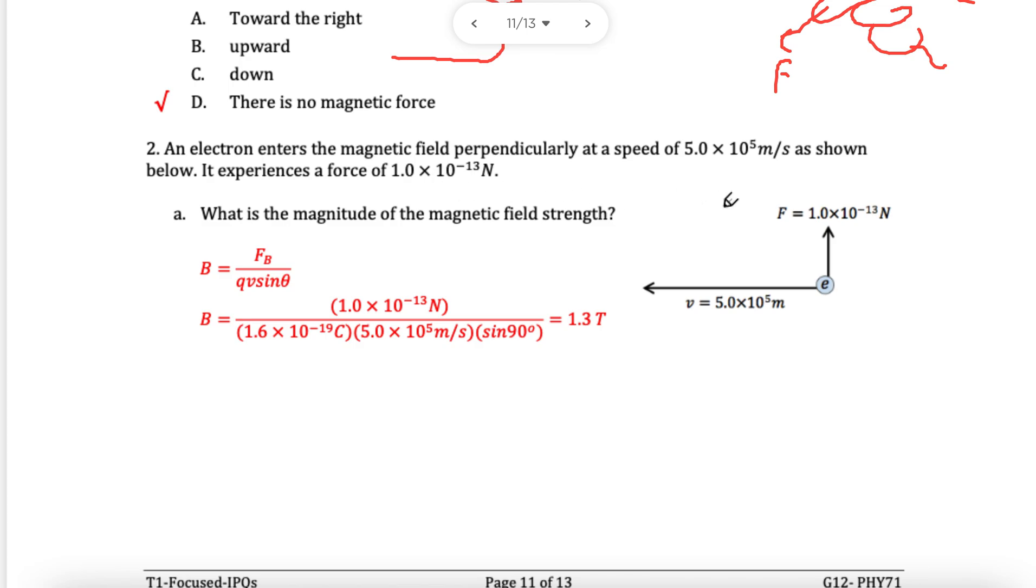An electron enters a field perpendicularly, as shown. What is the magnitude of the field's strength? We have an electron. That's a charge, 1.6 times 10 to the minus 19. We've only got a force and a speed. This is an electron, we have the charge. We will do F equals QVB, and you're supposed to write sine theta. This is perpendicular, sine of 90. Sine of 90 is 1, so we can ignore the sine theta altogether.